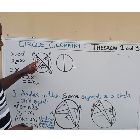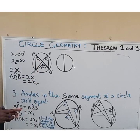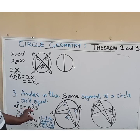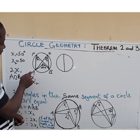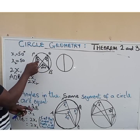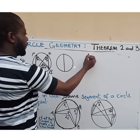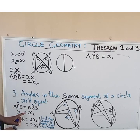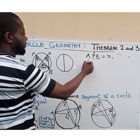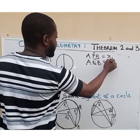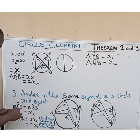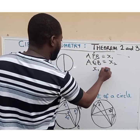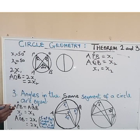The proof is that the angle at the center is twice the angle at the circumference. So angle APB equals angle AQB. Angle APB is x1 and angle AQB is x2. Therefore x1 equals x2.